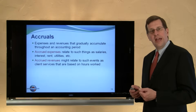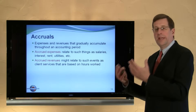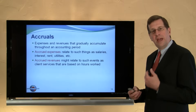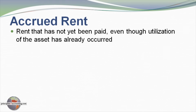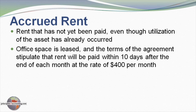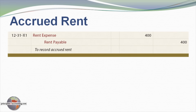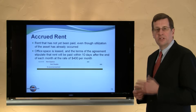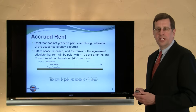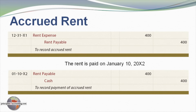Accrued revenues: if we're doing work for a client — an attorney, a lawn service, or an accounting firm — they're earning the right to receive payment even though they may not yet have billed the client. Let's look at an example accruing rent cost. We've leased office space and the lease stipulates rent will be paid within 10 days after the end of each month at $400 per month. Our adjusting entry on December 31 accrues the rent cost for December: debit rent expense and credit rent payable. We've already received the benefit of the service — we're paying in arrears. When rent is actually paid, we debit rent payable and credit cash.